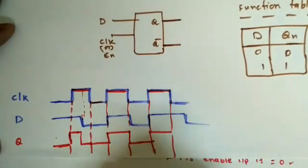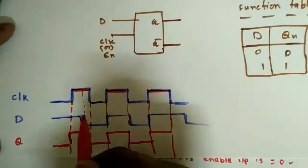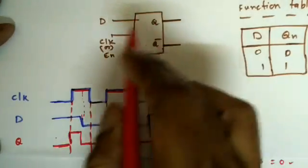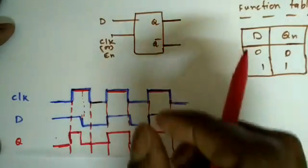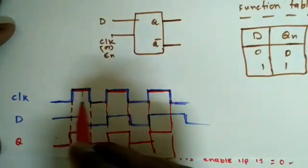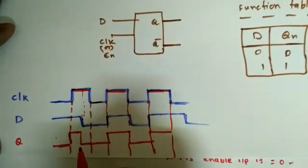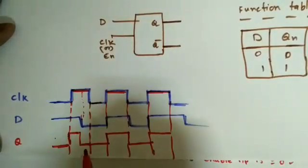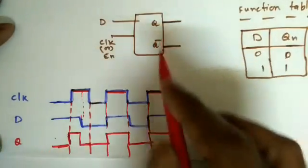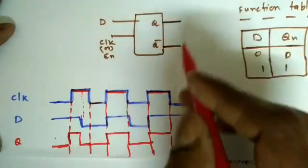The problem here is: suppose the propagation delay of this D latch is very small compared to the pulse width. While the input is changing, the output is also changing continuously. At the end of the clock we don't know what the output is — it may be one, it may be zero.